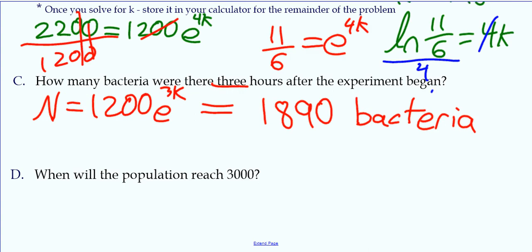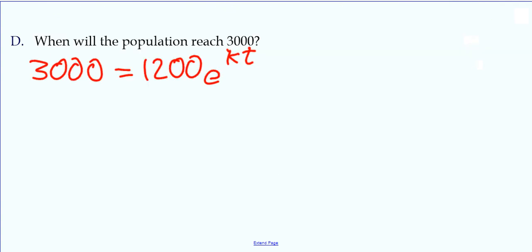So to figure out when the population reaches 3,000, we want to set it equal. So the exponent is kt, where k is the value that we have stored for k in our calculator. So we are trying to solve for t, so we're going to divide by 1,200. Cancel off the zeros, 30 divided by 12, reduce that to 5 over 2.